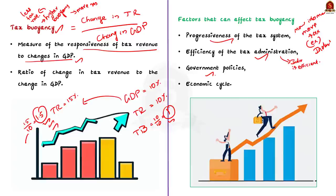The third factor is government policies. Government policies can also affect tax buoyancy. For example, if the government introduces tax cuts this will reduce tax buoyancy; however if the government increases tax it will increase tax buoyancy.